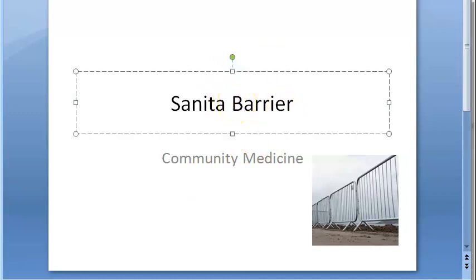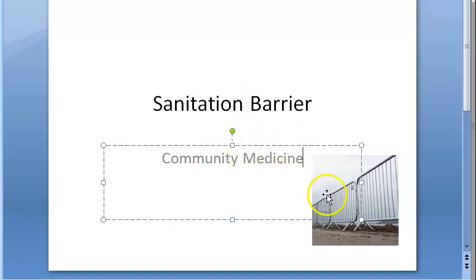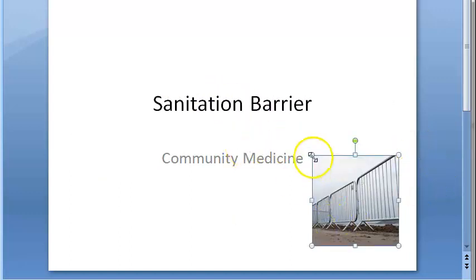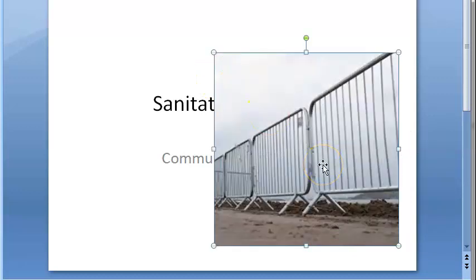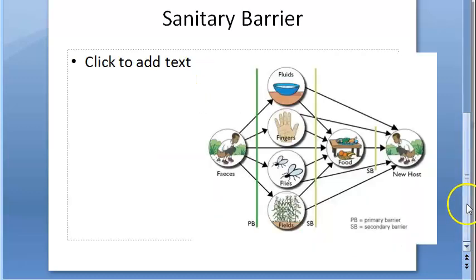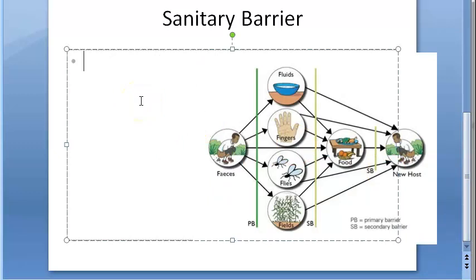Basically this is a community medicine topic. You understand that there is some kind of a barrier to maintain sanitation. So sanitation barrier is a method of segregating the feces and arranging for proper disposal of the feces so that the disease agent cannot reach the new host directly or indirectly.